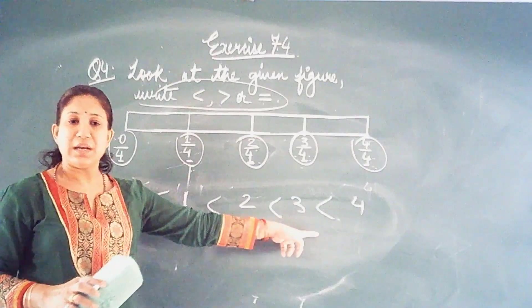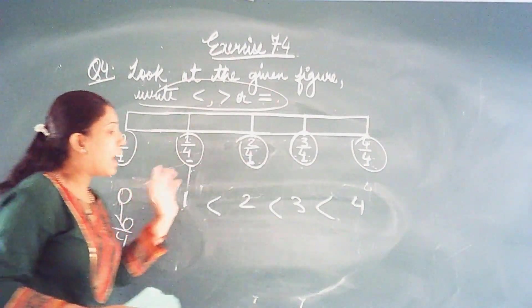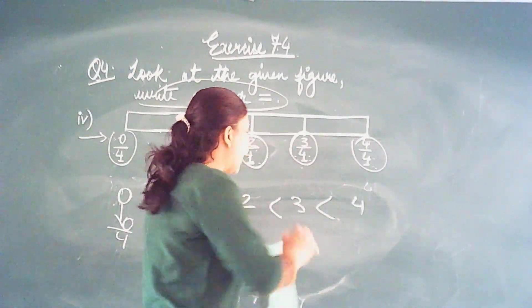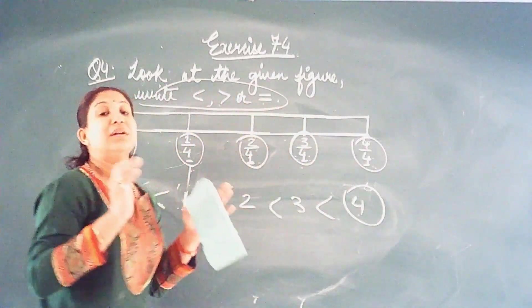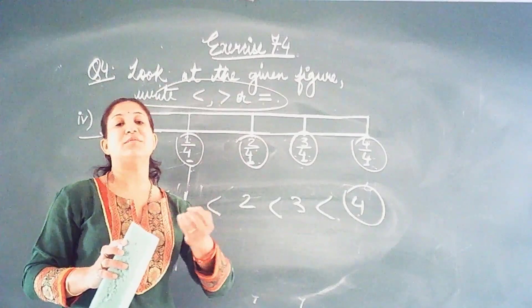Which sign we are putting less than? That means this is the smallest value. And 3 is less than 4 means 4 is greater. And in the entire number you will see 4 by 4 will be the greatest fraction. So this is what we understand from such question.